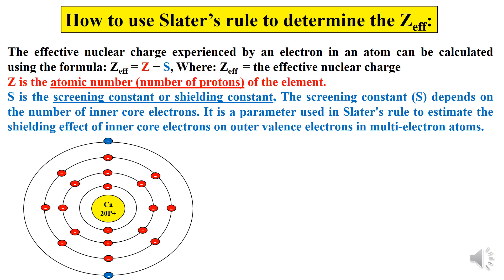I already explained the shielding effect of inner core electrons on outer valence electrons in the case of the calcium atom. In that case, the inner core electrons partially block or reduce the electrostatic force of attraction between the positively charged protons and the valence electrons, and therefore they are also called shielding electrons. The screening constant is an important parameter in Slater's rule to estimate this shielding effect.